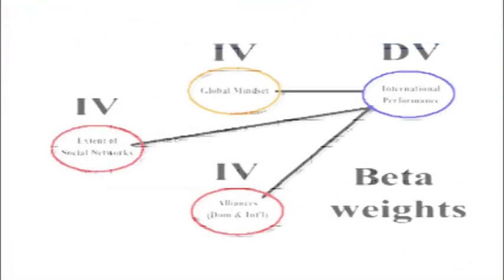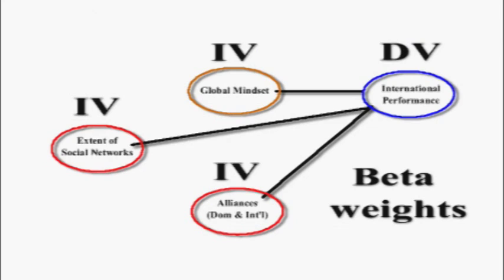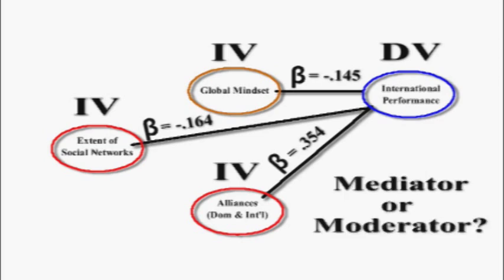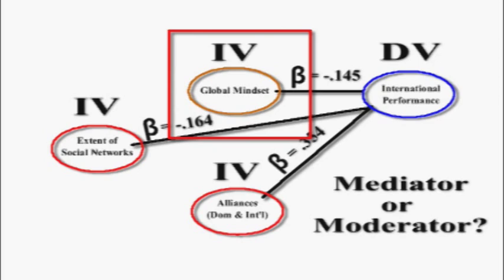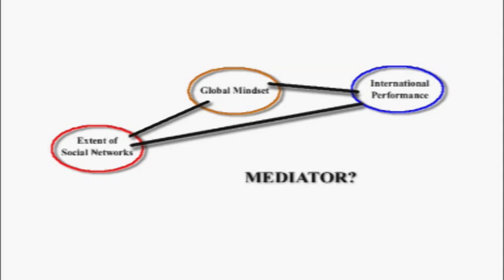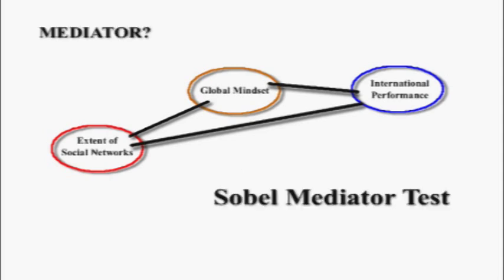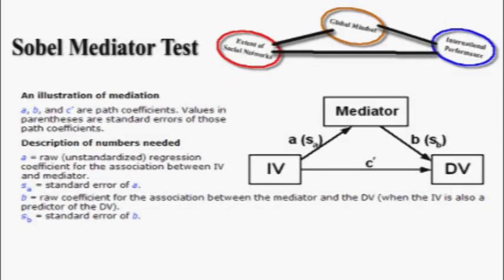Back to our model, we'll fill in the beta weights for each IV. Now we have to decide if any IV is acting as a mediator or moderator. From the information gathered, alliances looks like the likely candidate. We'll check to see if the global mindset is a mediator first, using the Sobel mediator test, also known as the Preacher-Sobel mediator test.